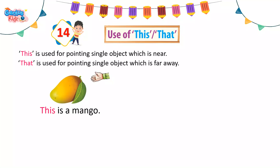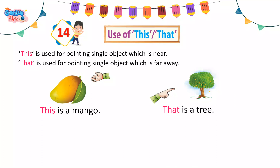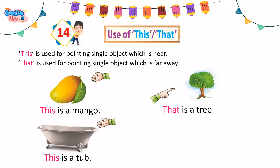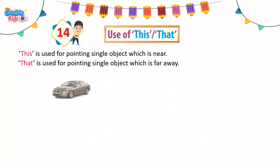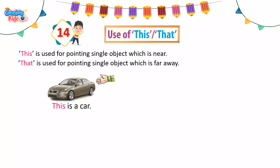This is a mango. That is a tree. This is a tub. That is a mug. This is a car. That is a bus.